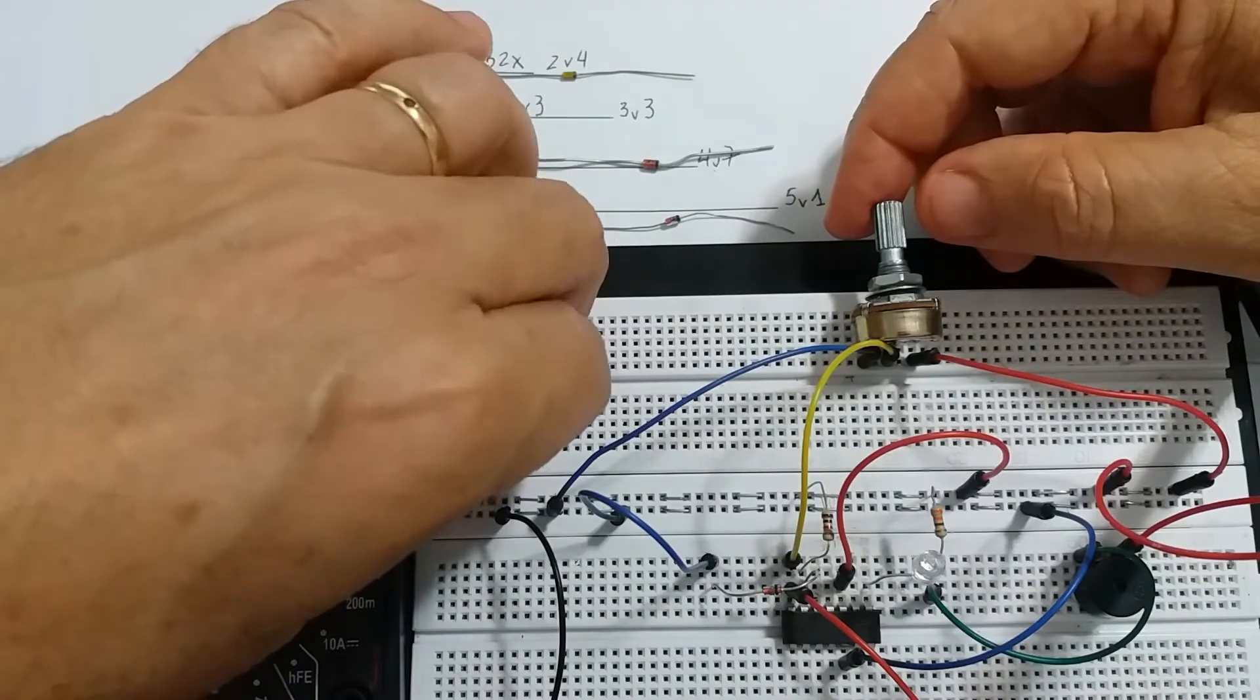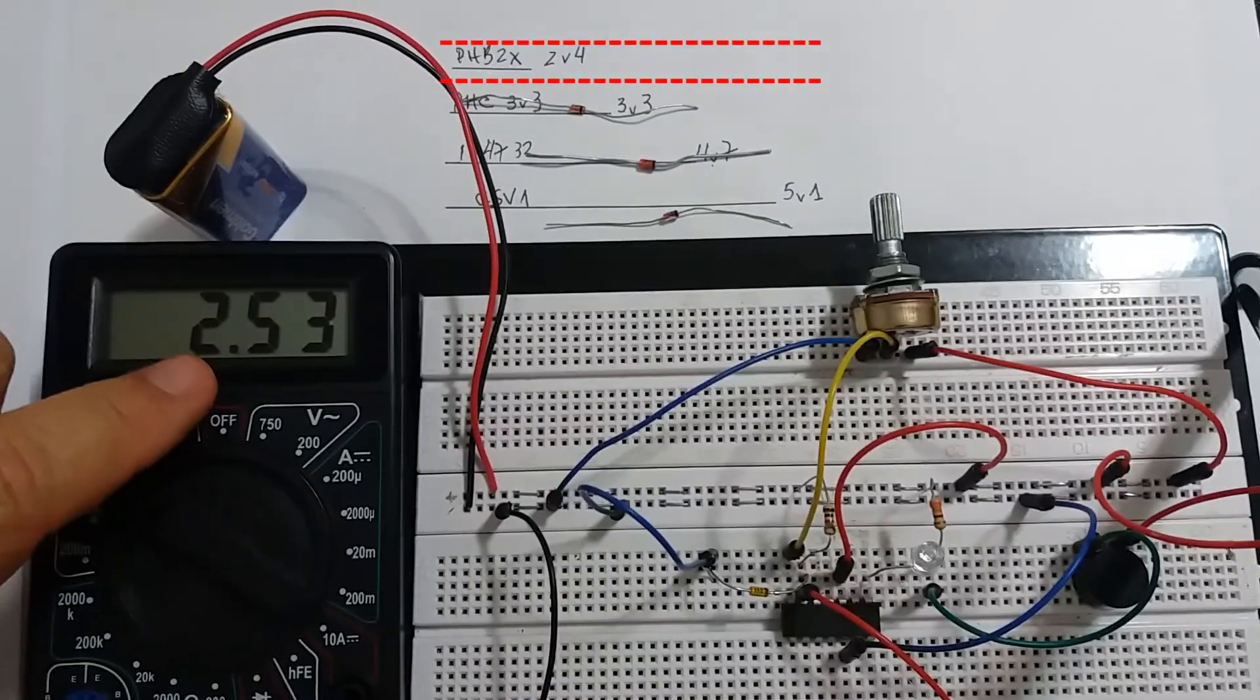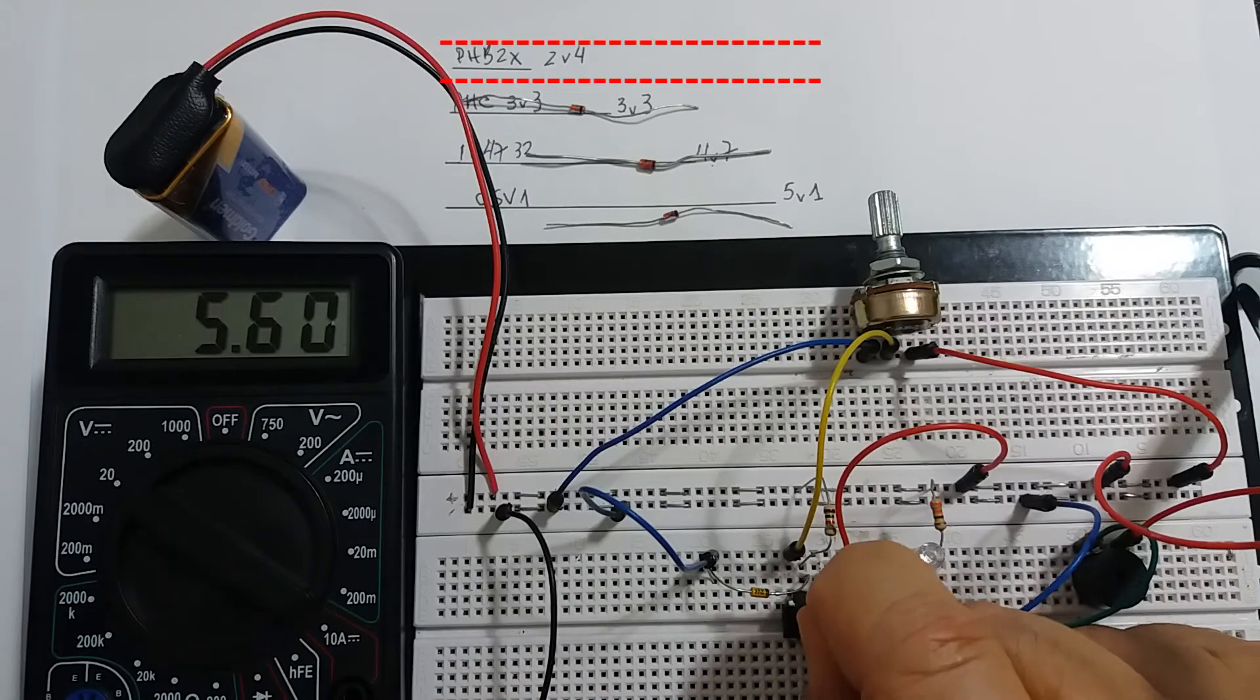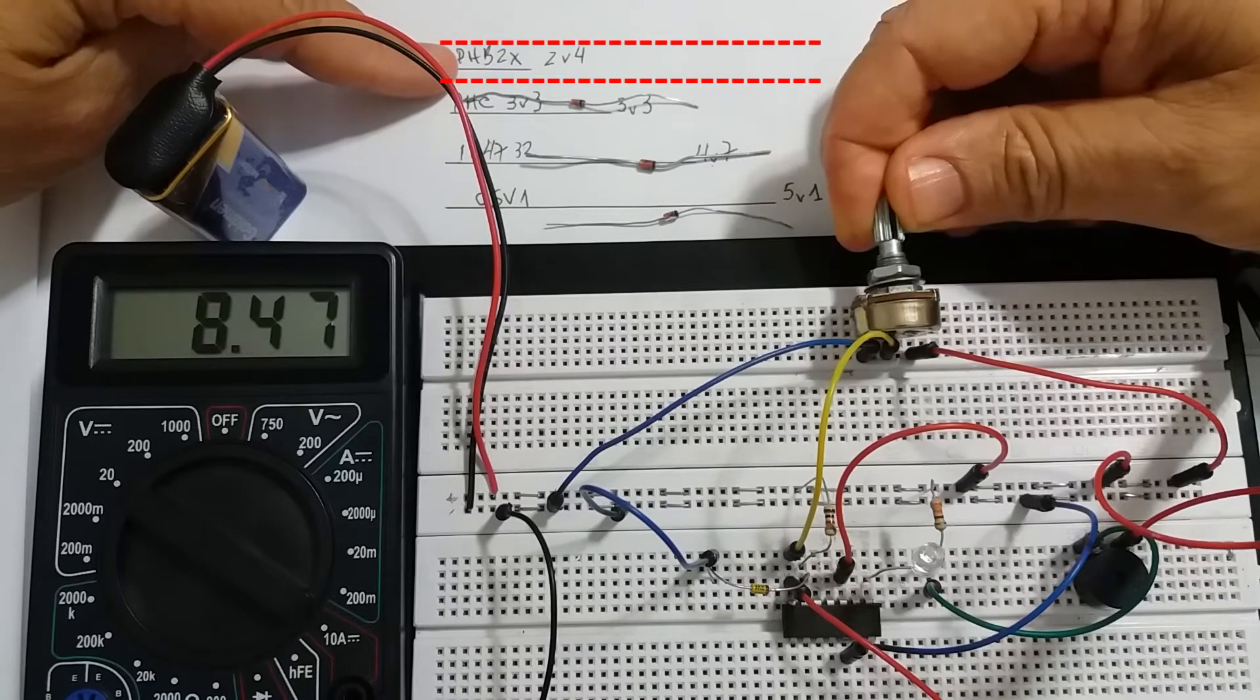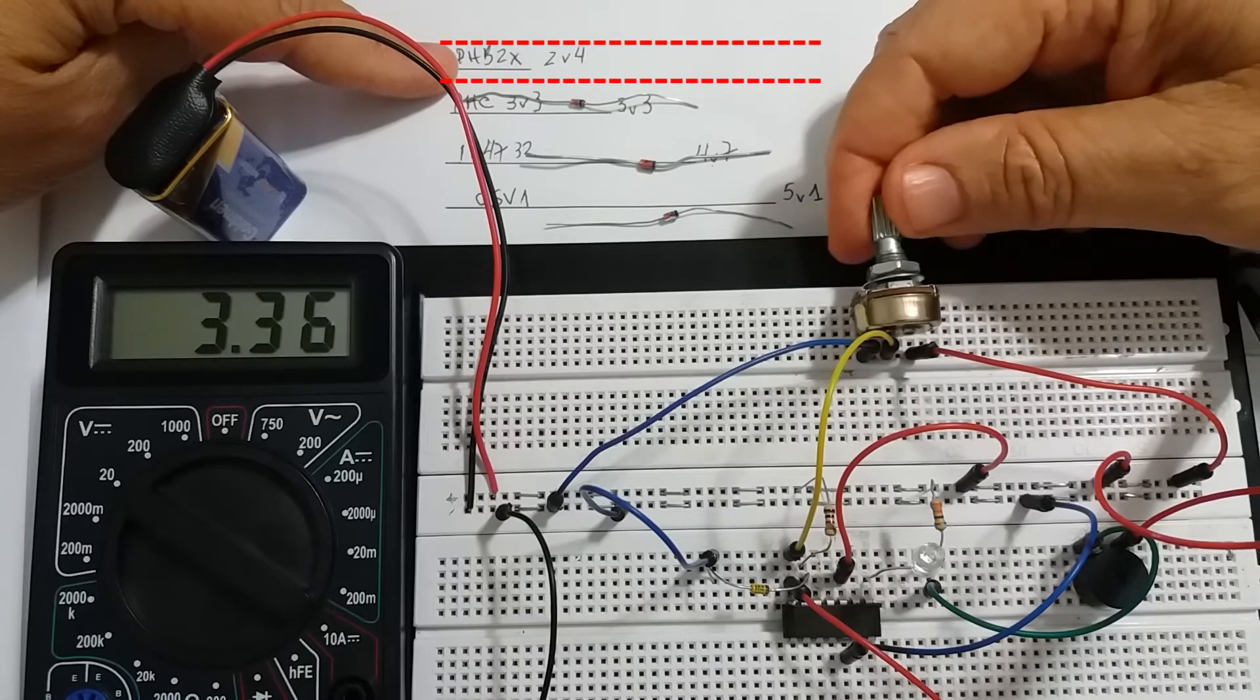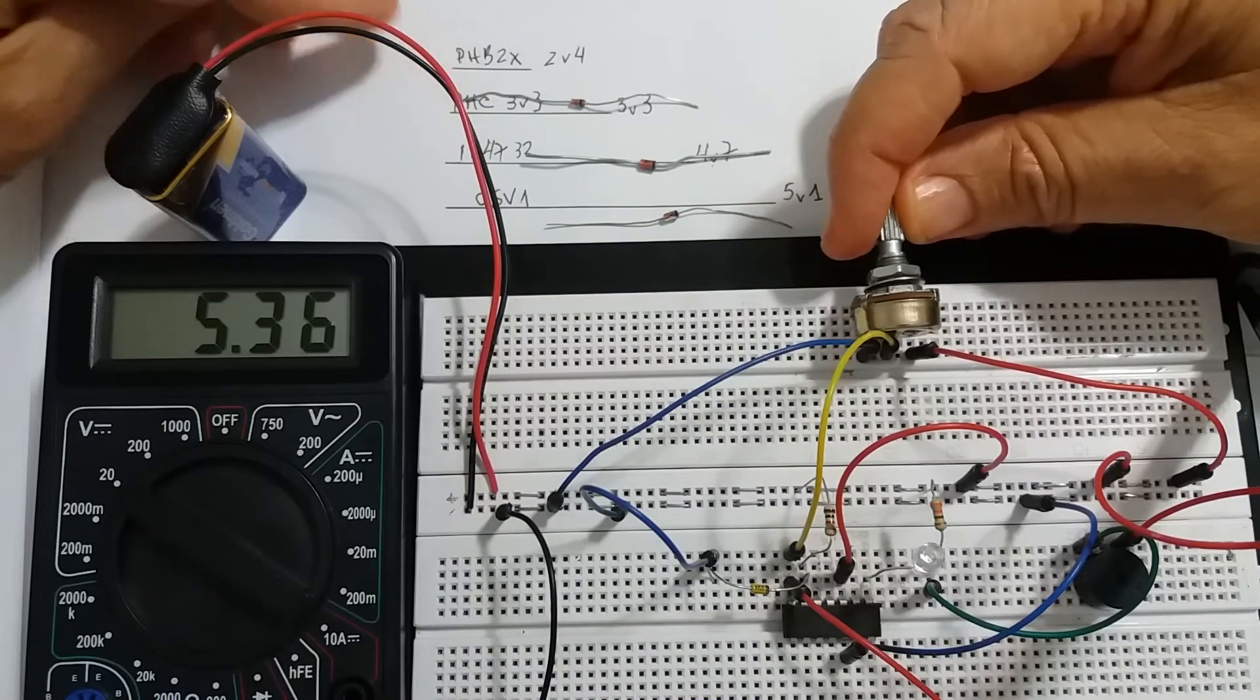Let's see the last one. 2.4 volts. 2.5 volts. Let's put the battery at high voltage. The battery now reads 8.9 volts, and when the set point is 2.5 or 2.6 volts, the battery is discharging. When it reaches 2.4 volts, it will alarm and beep. And there you are.